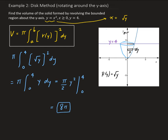And if this was an application problem, then this would be units cubed. So that is the volume. Eight pi is the volume that we get by taking this region that's defined here and revolving it around the y-axis.